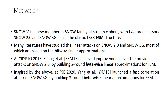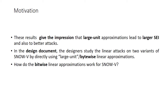Inspired by this work, at FSE 2020, Yang and others launched a fast correlation attack on SNOW3G by building three-round bytewise linear approximations for the FSM. These results give the impression that large unit approximations lead to larger SEI and better attacks. In the design document, the designers study linear attacks on two variants of SNOWV by directly using large unit or bytewise linear approximations. So the question is: how do bytewise linear approximations work for SNOWV?